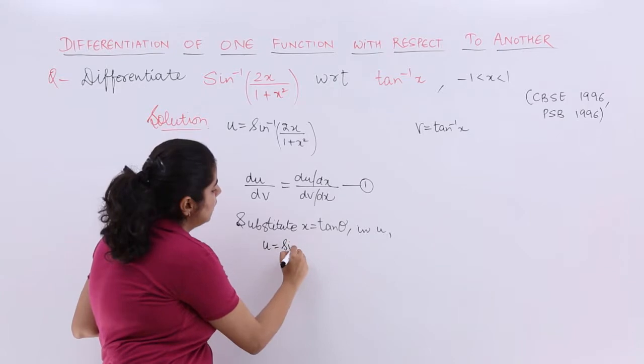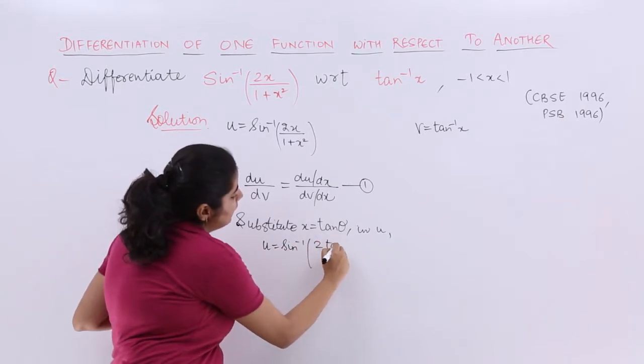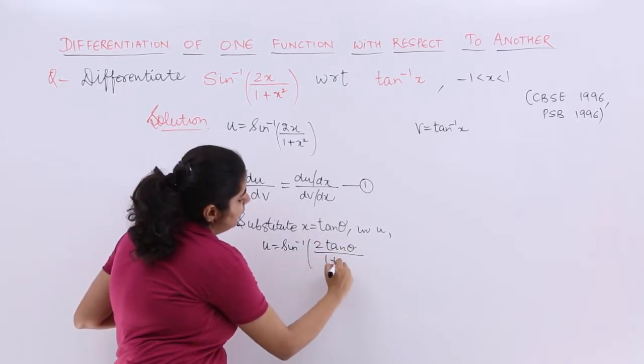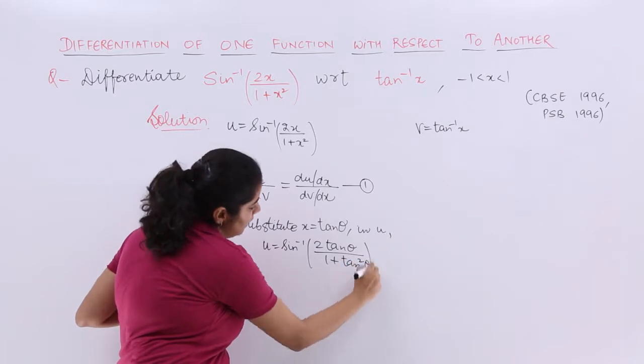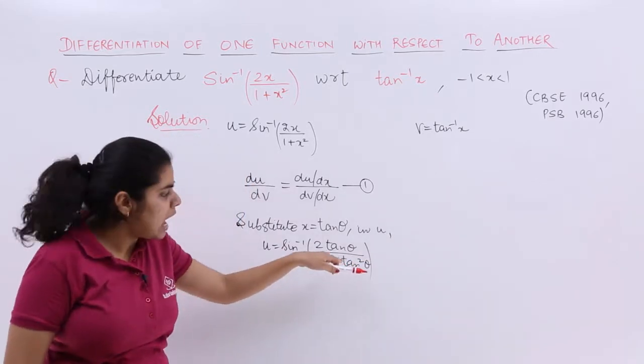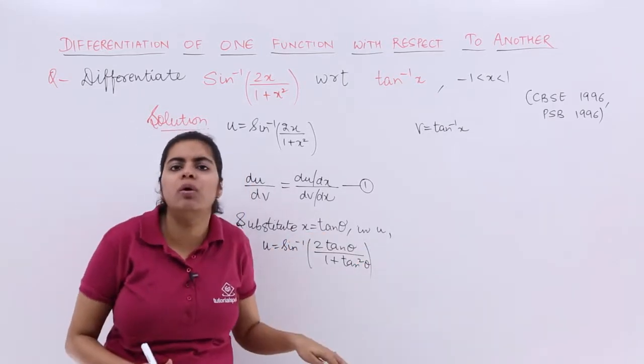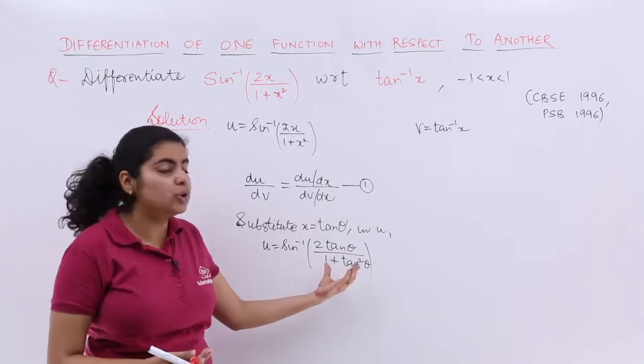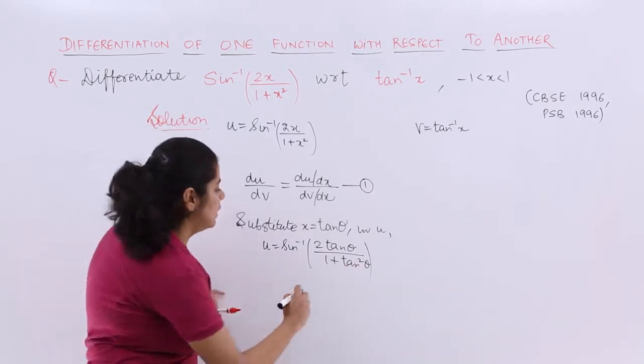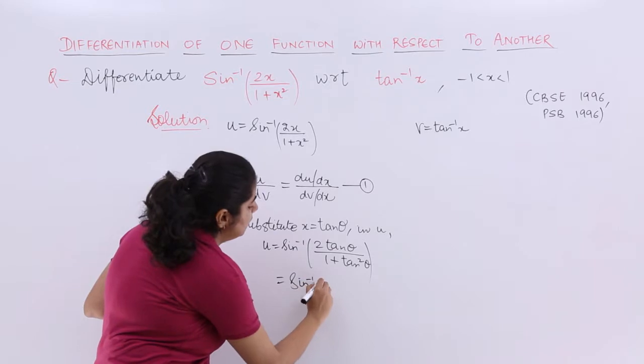My u becomes sin inverse 2 tan theta upon 1 plus tan square theta. Now see why I substituted this. Had I substituted cot theta, no formula would have occurred. But now 2 tan theta upon 1 plus tan square theta is equal to sin 2 theta that we know.